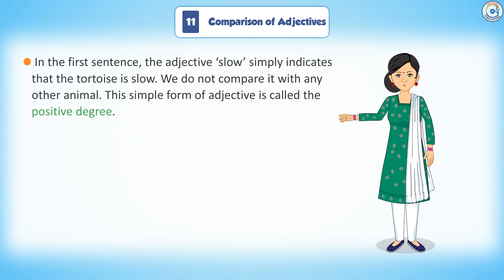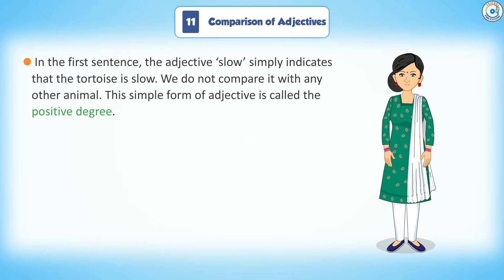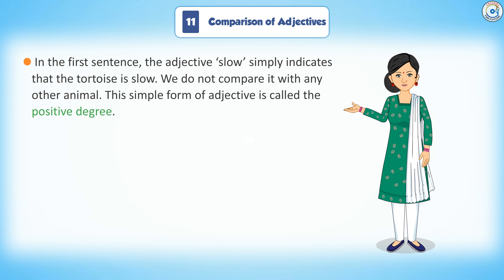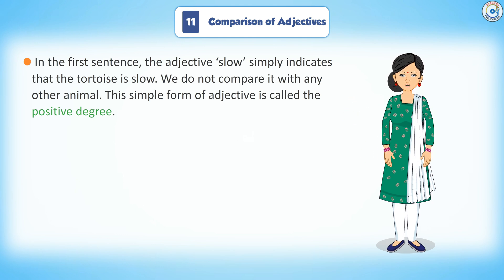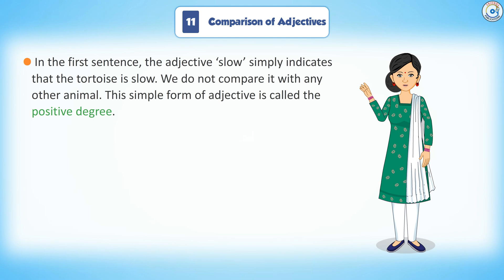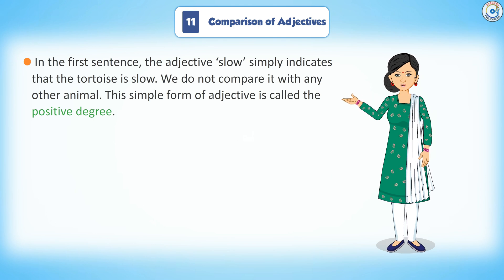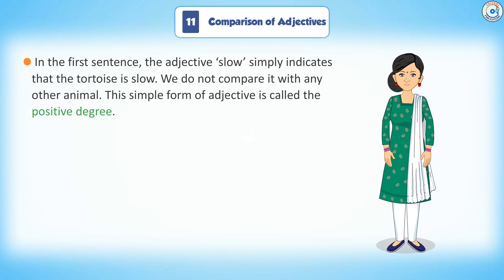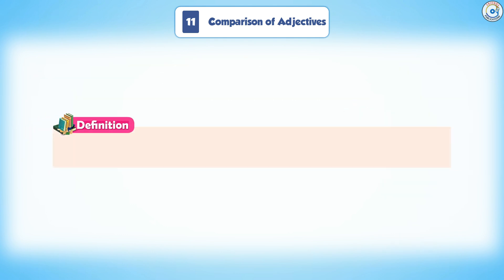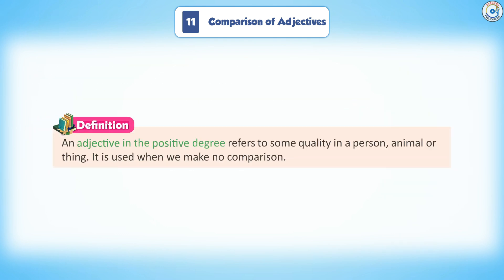In the first sentence, the adjective 'slow' simply indicates that the tortoise is slow. We do not compare it with any other animal. This simple form of adjective is called the positive degree. Definition: An adjective in the positive degree refers to some quality in a person, animal or thing. It is used when we make no comparison.